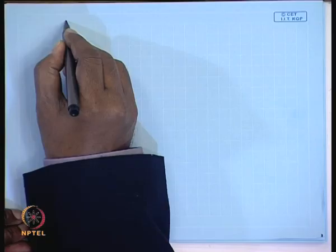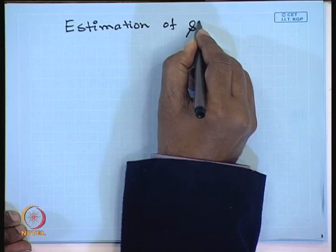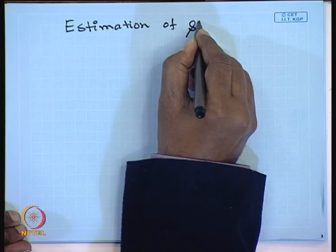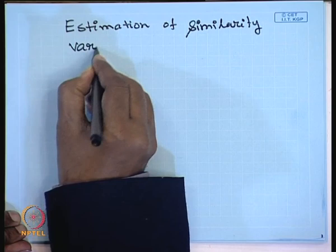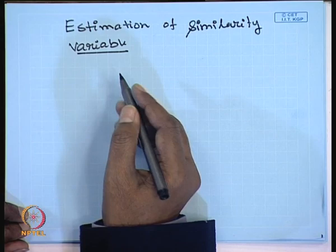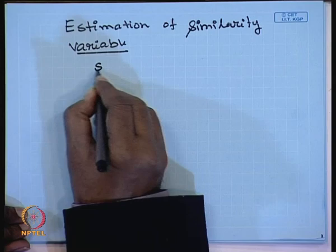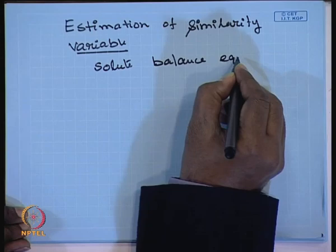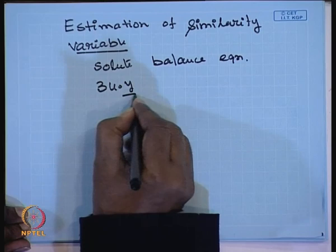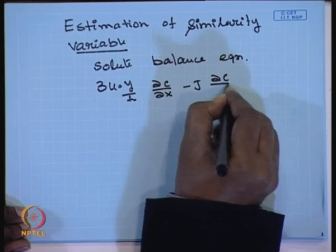Now let us look into the estimation of the similarity variable. It is called the similarity variable or similarity parameter or combined parameter. What you have to do first: we write down the equation of motion — the solute balance equation. The solute balance equation we have written is 3u₀y/h · ∂c/∂x − j · ∂c/∂y = D · ∂²c/∂y².